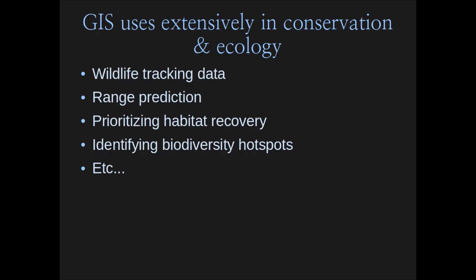GIS is used extensively in conservation and ecology. We use it for things like keeping track of wildlife tracking data, and range prediction of species — modeling where species would exist based on what we know about where they occur, combined with temperature data, vegetation cover, elevation, slope and aspect of terrain. Taking all these different factors, we can predict where animals should exist based on the physical and biological communities present and the information we already have about where those species are.